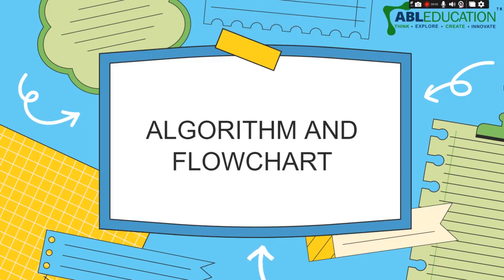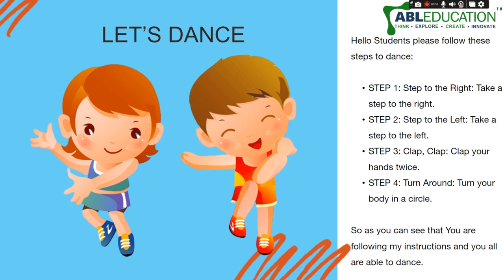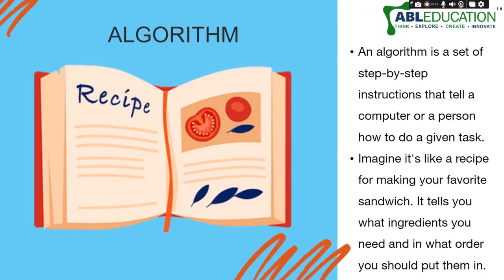Hello and welcome, students, to this Scratch video series. Today we are going to talk about algorithms and flowcharts. In the previous lesson, we did the following activity: take a step to the right, take a step to the left, clap clap, and then turn around. We also learned what an algorithm is. By definition, an algorithm is a set of step-by-step instructions that tell a computer or a person how to do a given task — imagine it like a recipe for making your favorite sandwich. I also gave you the example of Ananya taking a glass of water.